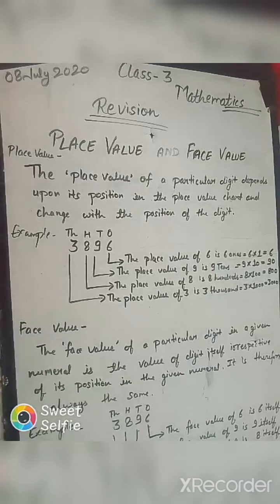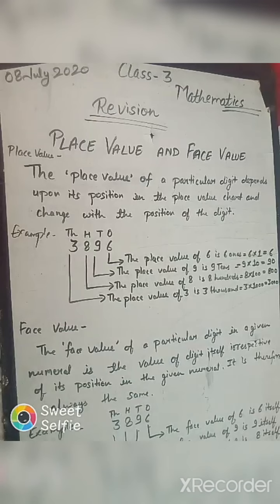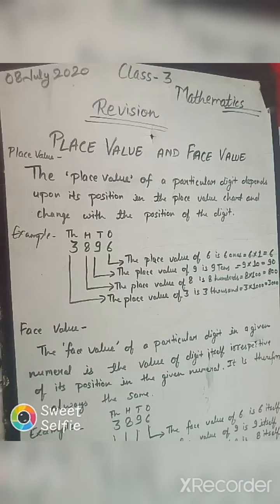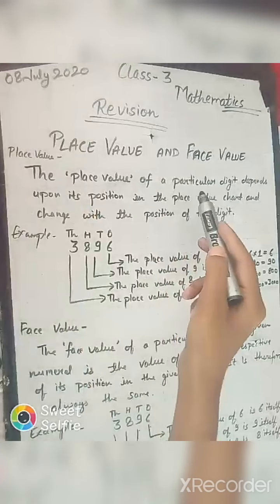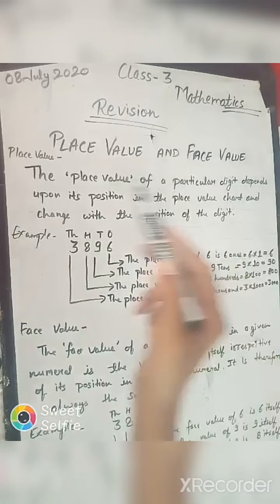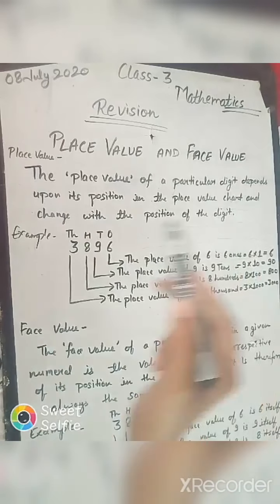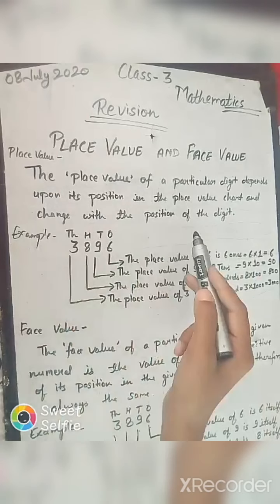As we know, numbers are made up of digits. The place value of a digit depends upon its position in the number, and changes with the position of the digit. Whereas the face value of a digit remains unchanged. The place value of a particular digit depends upon its position in the place value chart.